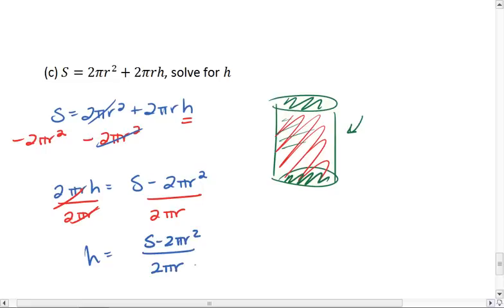Again, notice that 2 pi R's do not cancel because it's not present in both terms in the numerator. Which makes this our final answer: H equals the quantity S minus 2 pi R squared all over 2 pi R.